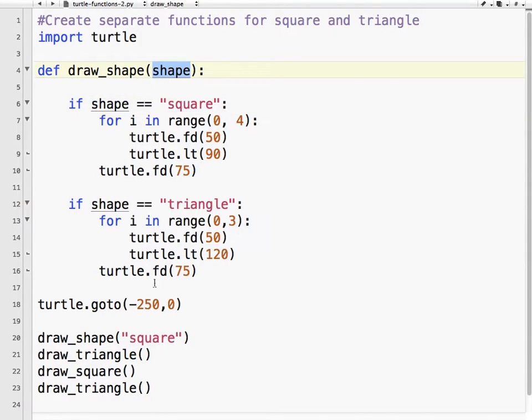Okay, so shape is this. So when I call the function drawShape, this value, square, is passed on to shape. So shape equals square.